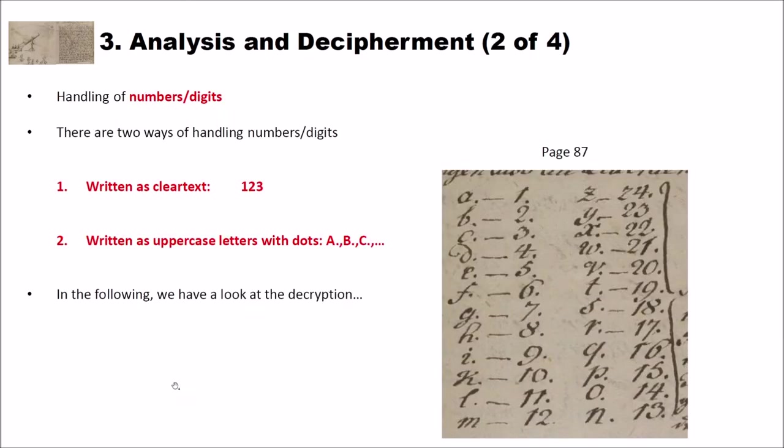There's another interesting peculiarity with the cipher that I have already told you. And that is the handling of numbers and digits. And there's something I didn't tell you. And that is that there are two ways of handling numbers or digits in the cipher. Numbers can either be written as cleartext. So when you have 123, you have the 123 also in the ciphertext not encrypted. Or it can be written as uppercase letters with dots A, B, C. You can see this here. You can find this on page 87 in that book. We have A is one dot, B is two dots, C is three dots and so on.